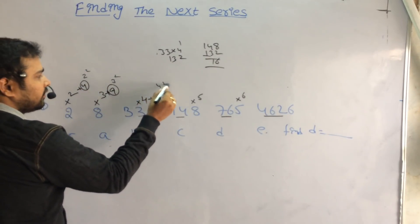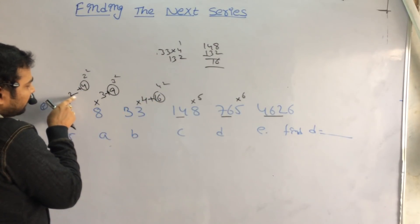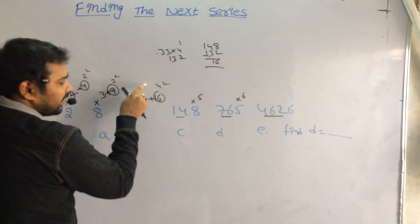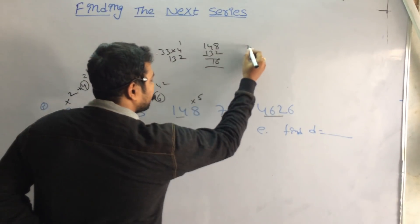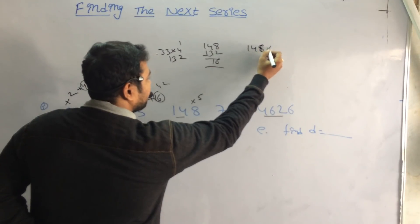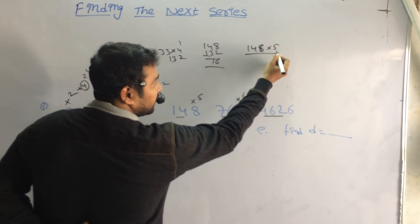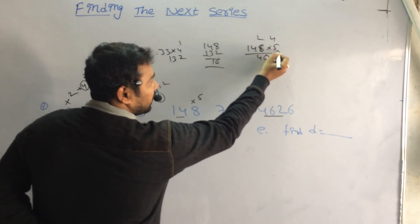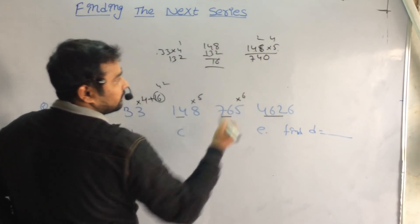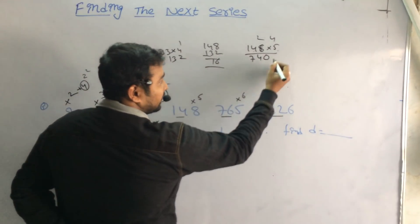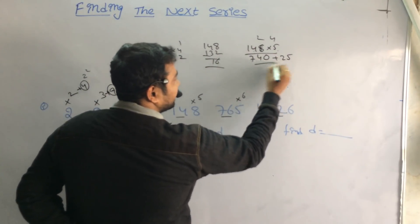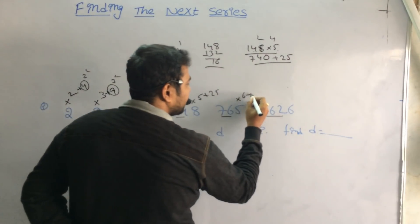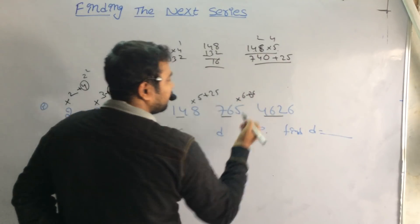The additions are perfect squares: 2 squared, 3 squared, 4 squared — multiply by 2 and add 2 squared, multiply by 3 and add 3 squared, multiply by 4 and add 4 squared. So next it is multiplied by 5 and add 5 squared (25). 148 into 5 is 740, plus 25 is 765. Then it is into 6 plus 6 squared, meaning plus 36.